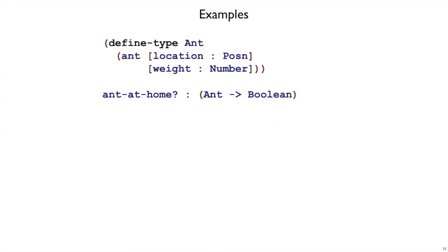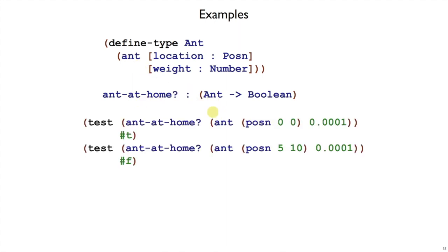Let's make some examples for ant-at-home. That means it's going to be open paren test, open paren ant-at-home with some ant, which I write using the ant constructor. That first field needs to be a posin, so I've written open paren posin. Going back to the posin data definition, that means I need two numbers — I picked zero and zero. And then for the rest of ant I need a weight, which is a number, so let's say 0.0001 kilograms. In this particular example, that ant is at the origin, so we'll return true.